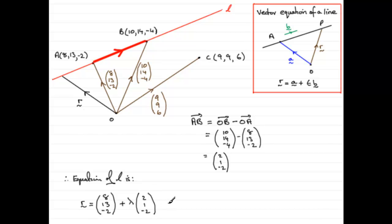As I say, you didn't need to pick this as your starting point. You could have picked quite easily this point here, B. So, if you had done that, R would have been equal to 10, 14, minus 4. And we can use another Greek letter, say, let's say Mu. And then we've got the direction vector. And you can take 2, 1, minus 2 again. 2, 1, minus 2.